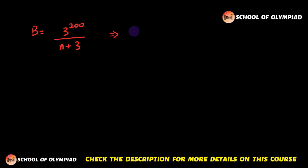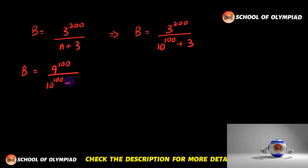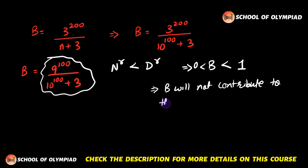Now let us consider quantity B. B is 3^200 divided by (n+3), which equals 3^200 divided by 10^100 plus 3. This can be written as 9^100 divided by 10^100 plus 3. Here the numerator is less than the denominator, so B is between 0 and 1, and hence B will not contribute to the floor function.